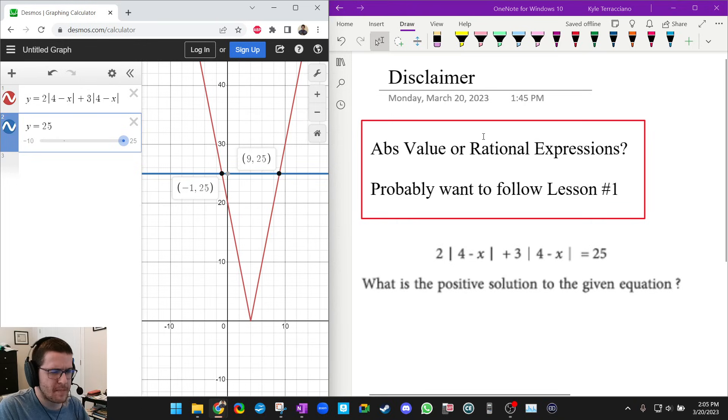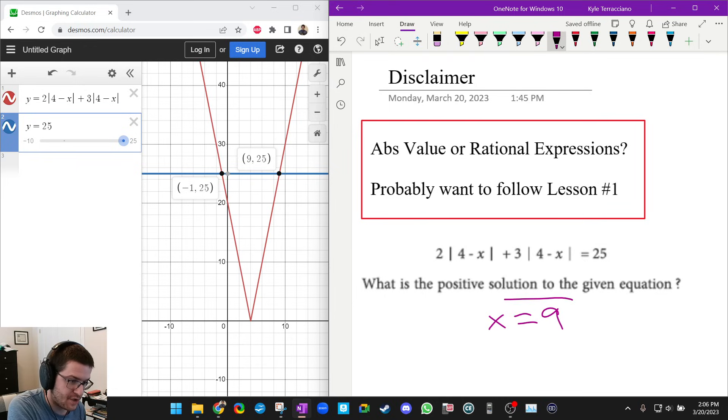Sometimes, for whatever reason, when you have a really messy equation, it won't tell you the answer when you click on it. So just keep that in mind. I still think the lesson number one strategy has a lot of merit to it. So hopefully that explanation kind of made sense. So the positive solution to this one is nine. And I don't need to read the graph. I know for sure that it's nine, because Desmos told me.